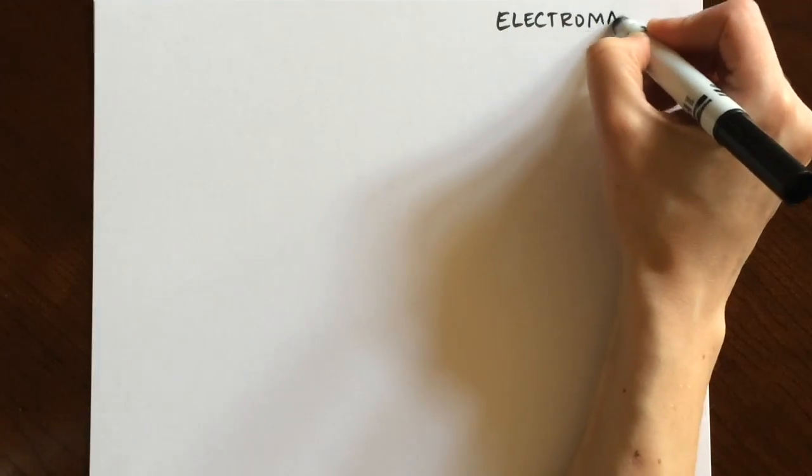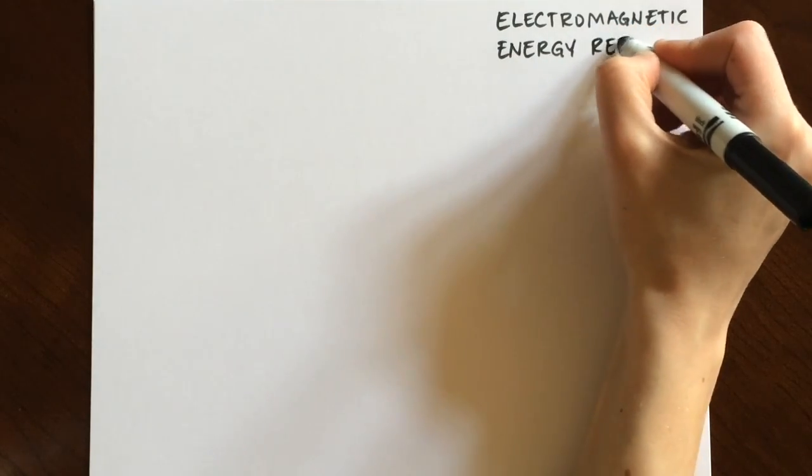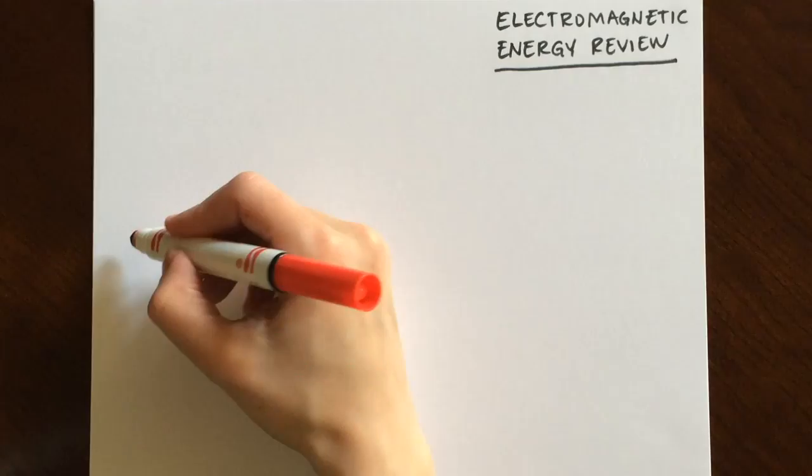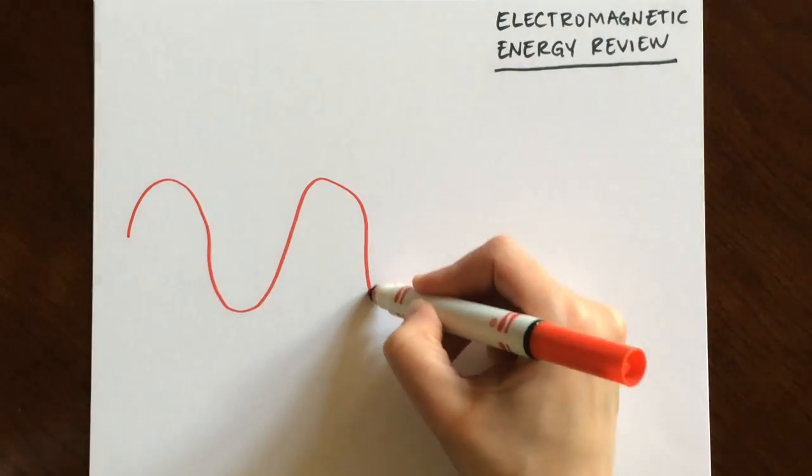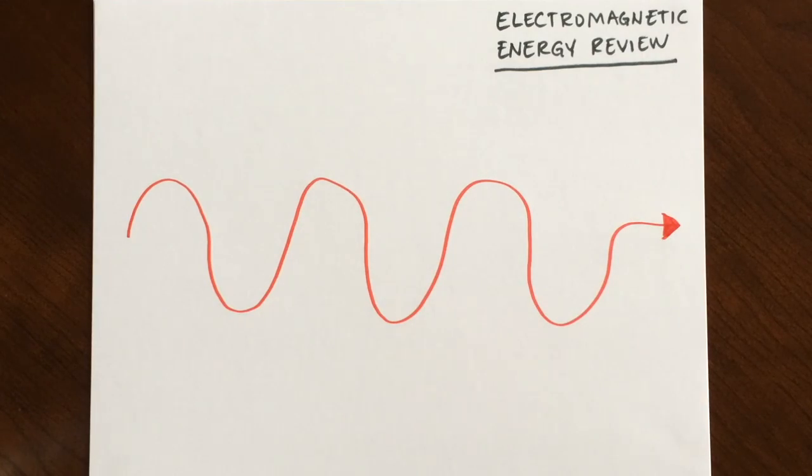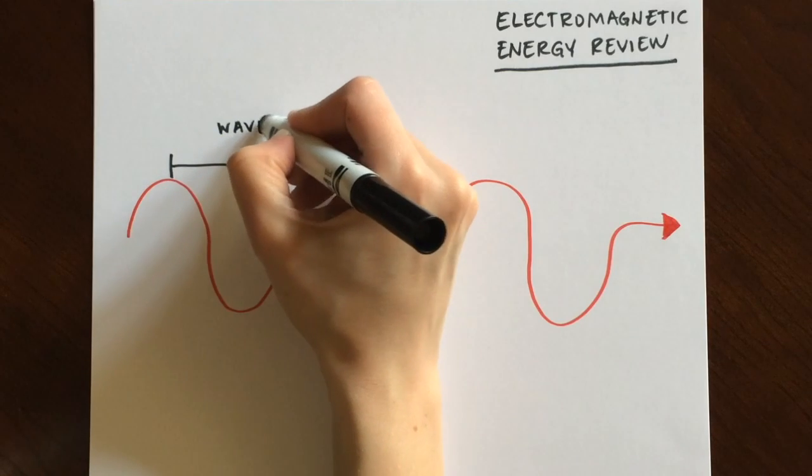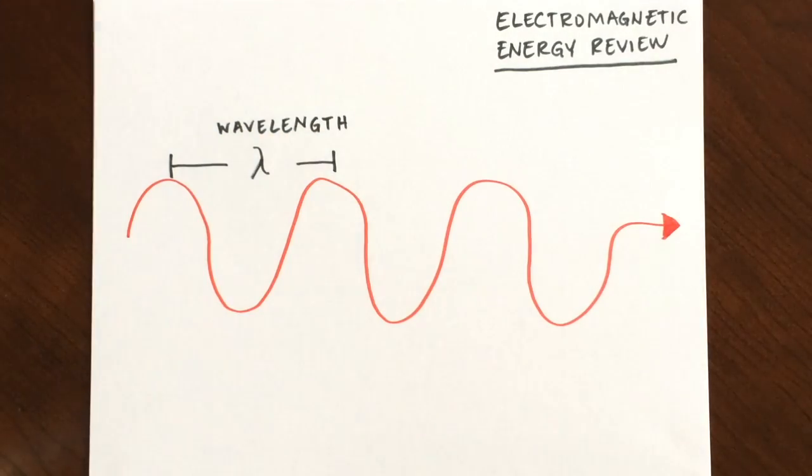Let's take a moment to review a little about electromagnetic energy. X-ray photons are a type of electromagnetic energy that travel through space in a sinusoidal fashion. Photons that travel a shorter wavelength move with increased frequency and energy, so the relationship between wavelength and energy is indirectly proportional.